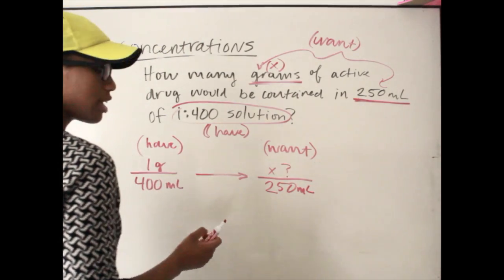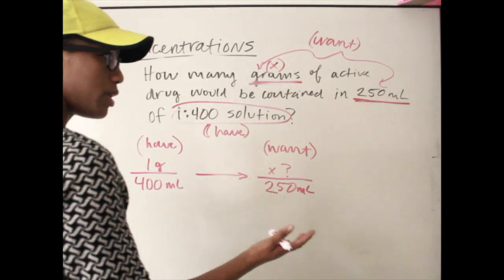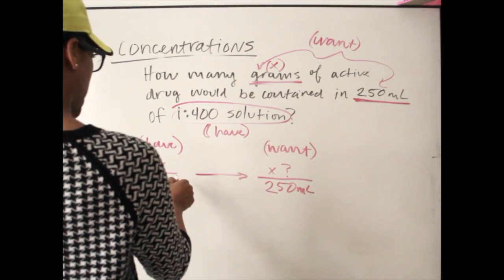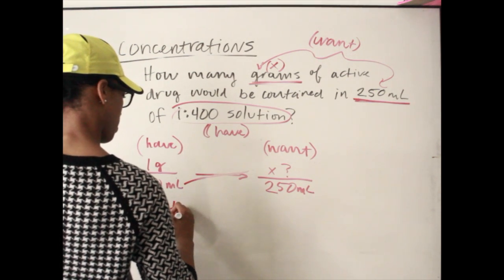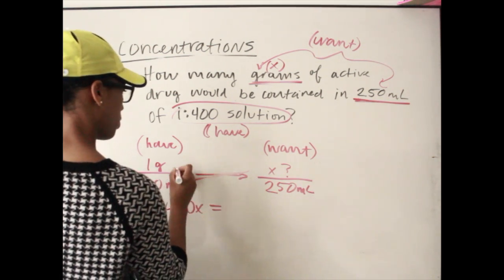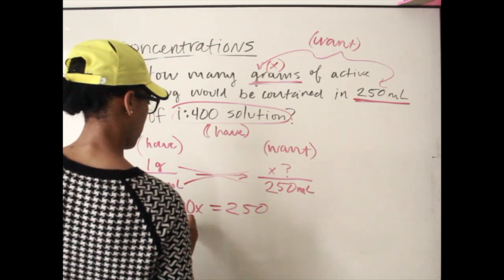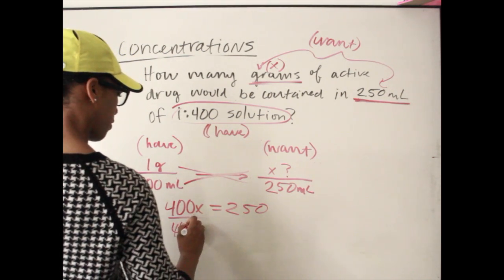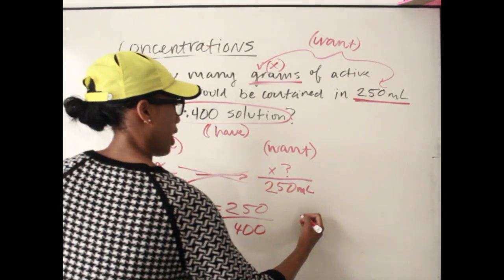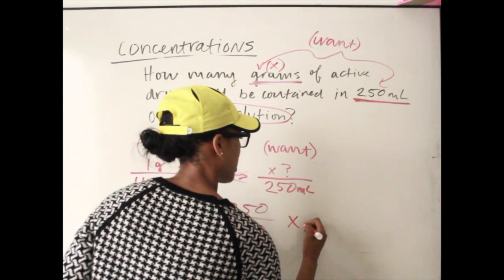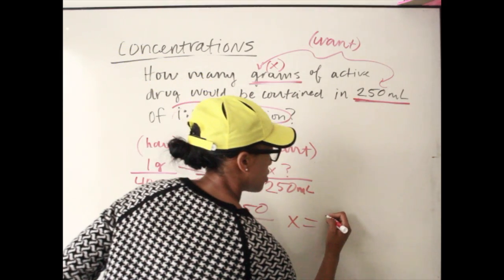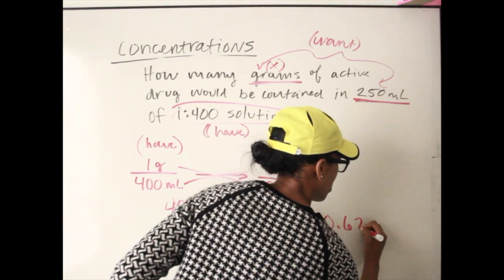From here we cross multiply and find the missing variable. We get 400x equals 250. Divide both sides by 400, and x equals 0.625 grams. If you have your calculator you can work that out.